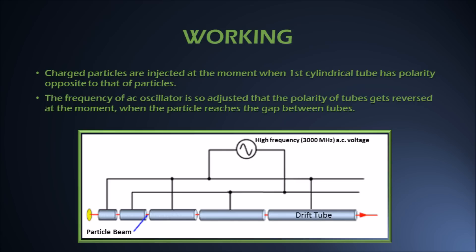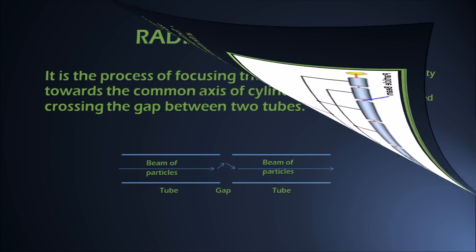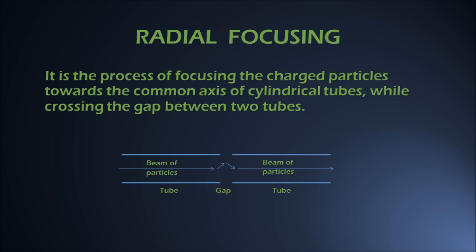This is about the working of linear accelerator. Now, during working, there are some problems. One of the problems is radial focusing of charged particles. It is nothing but the process of focusing the charged particles towards the common axis of cylindrical tubes while crossing the gap between two tubes.